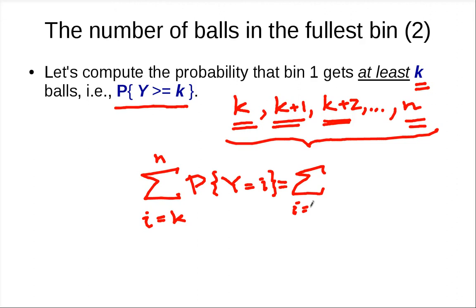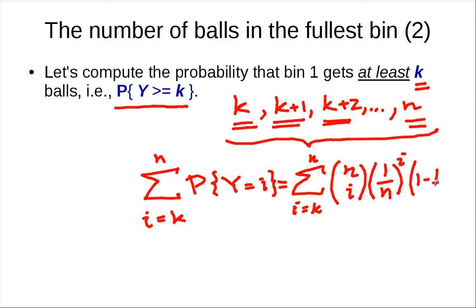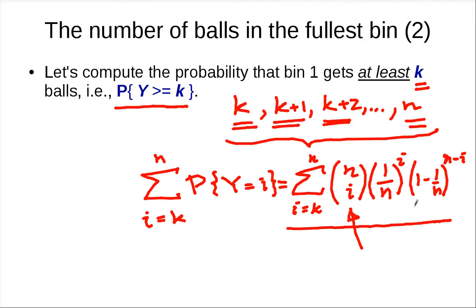So plugging in what we had, we get the sum from i equals k to n of: n choose i times (1/n)^i times (1 - 1/n)^(n-i). To bound this, we want to find an upper bound. The term (1 - 1/n)^(n-i) is at most 1, so we can just ignore it and say it's 1. The really problematic term is n choose i, but there's a useful fact we can use.